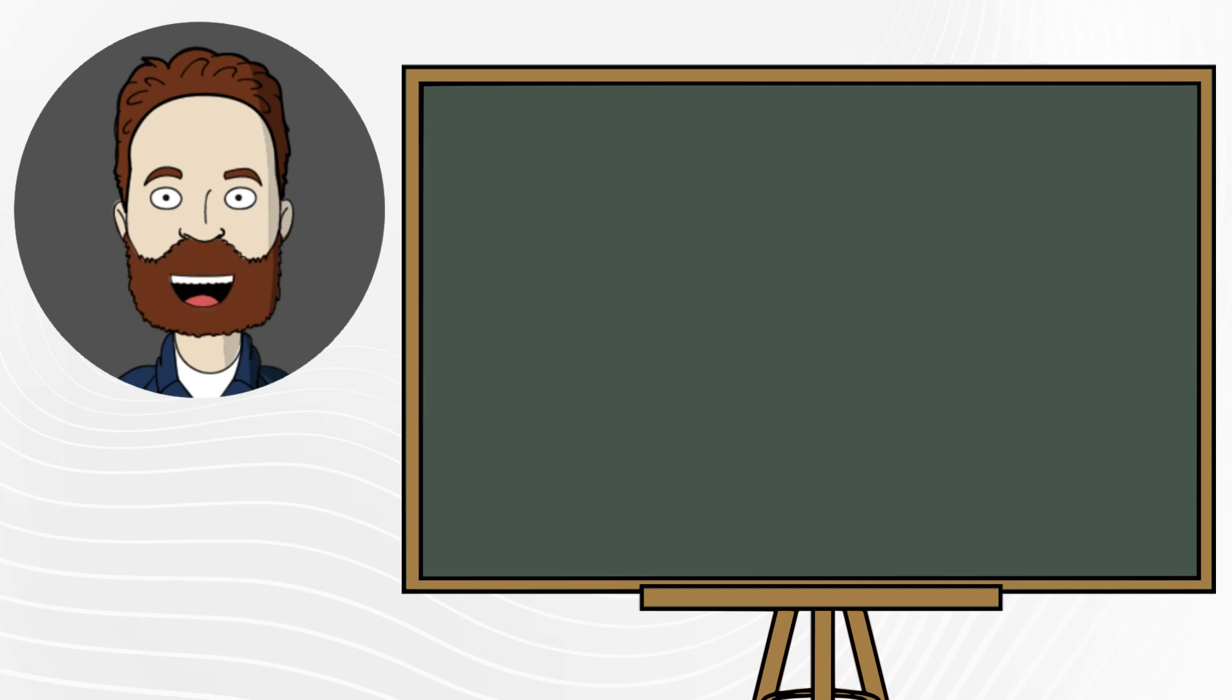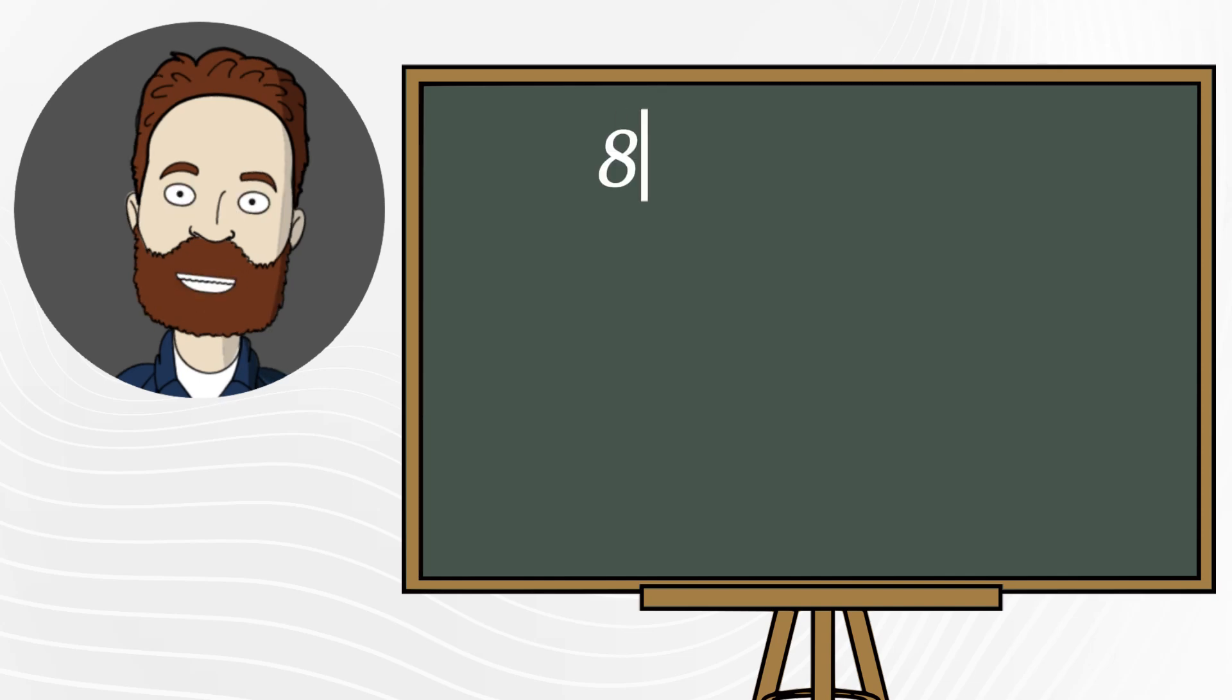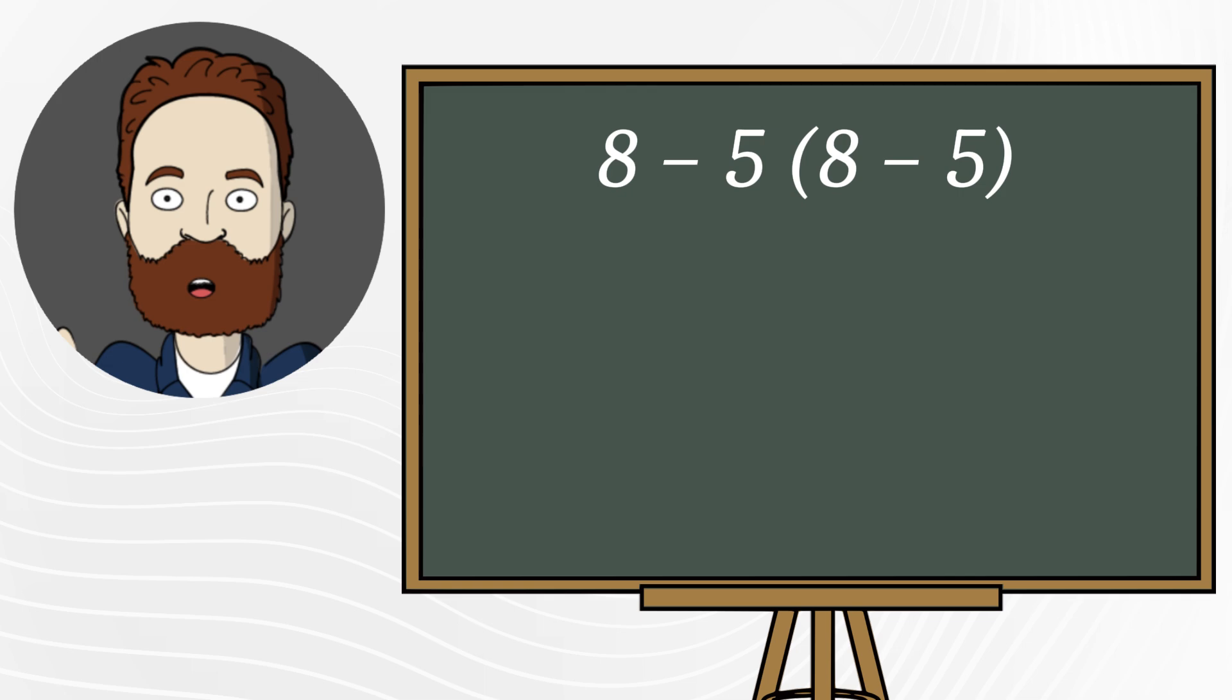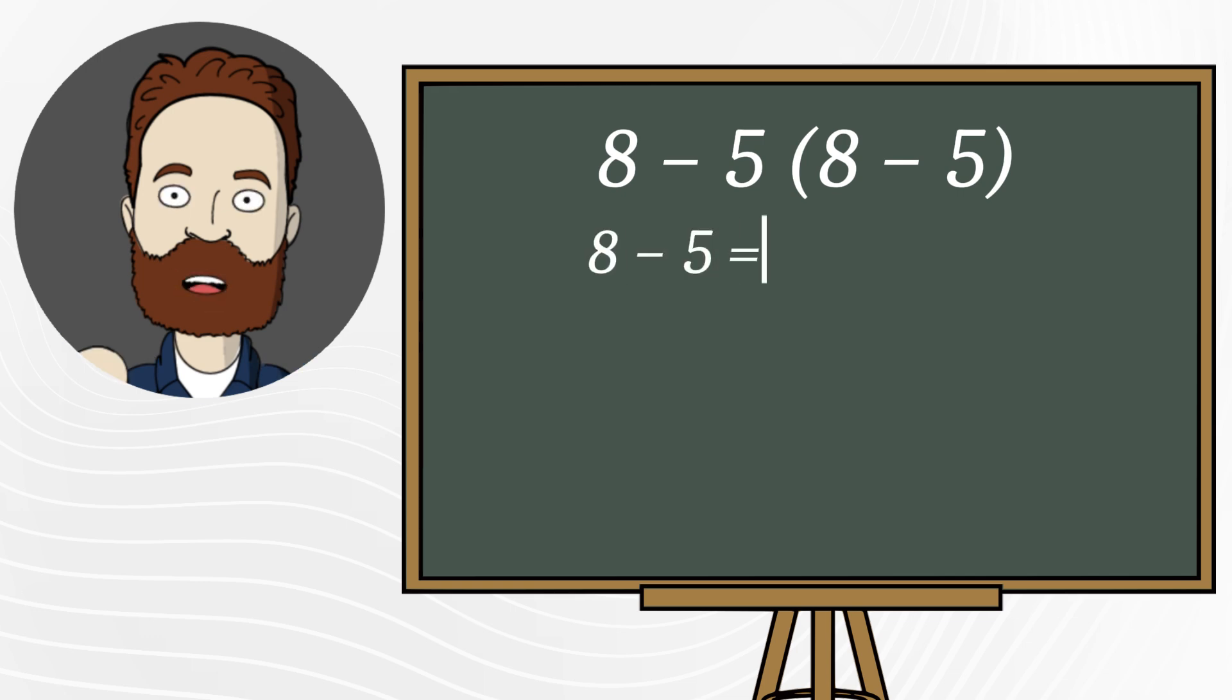Hello, everyone, and welcome back. Today, we have another example that often causes confusion. Many people solve it like this, going strictly from left to right. First, they do the subtraction, 8 minus 5 equals 3.